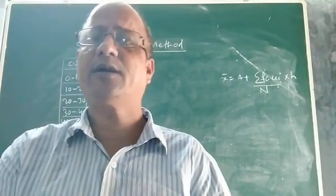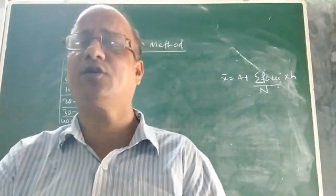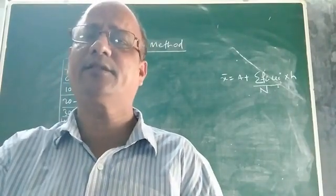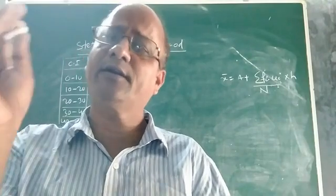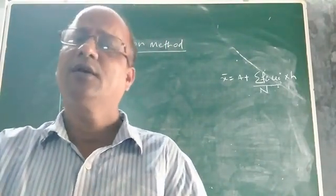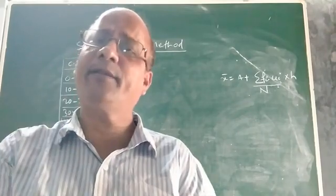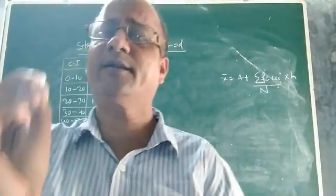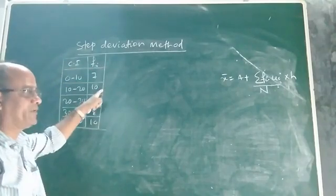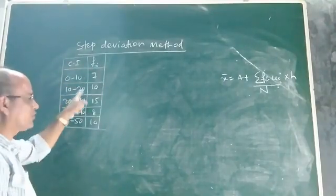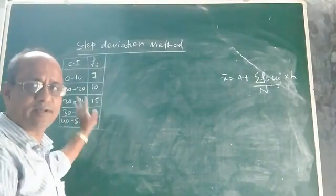Earlier we discussed the shortcut method or assumed mean method, and the long method or direct method of calculating mean of continuous frequency distribution as well as discrete frequency distribution. Now let us see what the step deviation method is, and how to find the mean of a continuous frequency distribution using it.